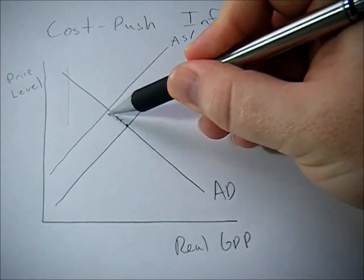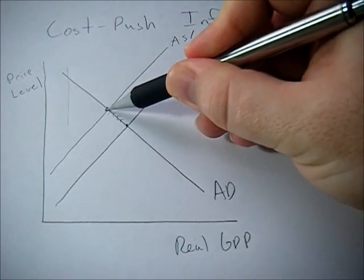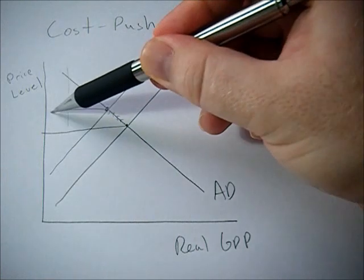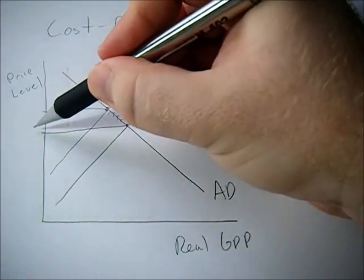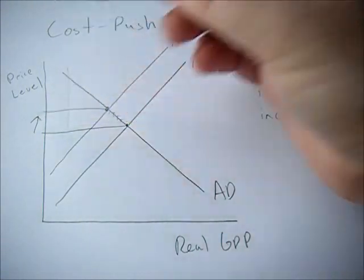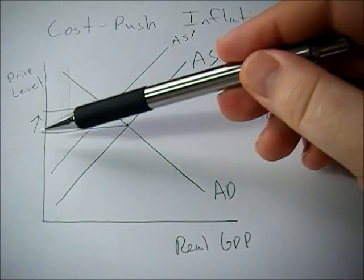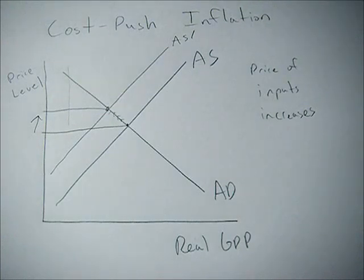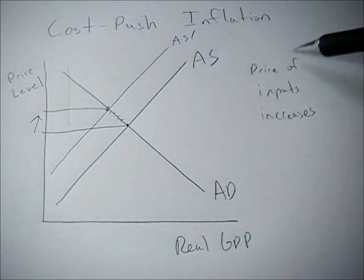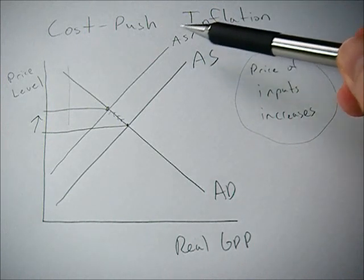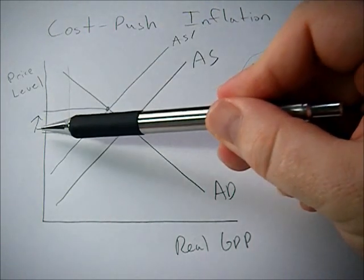Over time we reach that new equilibrium level, and if you look at the equilibrium price level, it goes up. As the price level goes up, that's inflation — prices of things go up, price level goes up, that's inflation. So that's what causes cost push inflation: the price of inputs going up shifts aggregate supply, causing the equilibrium price level to rise.